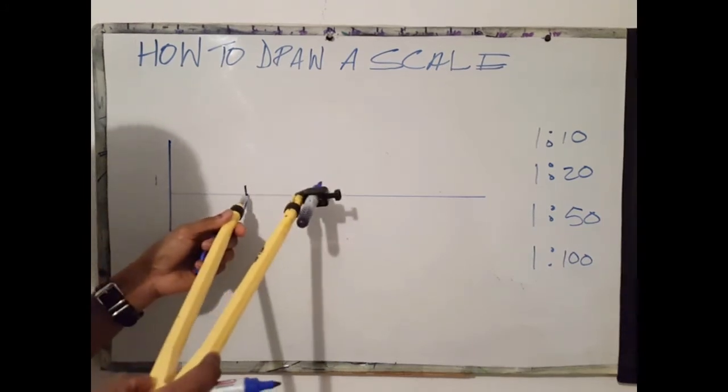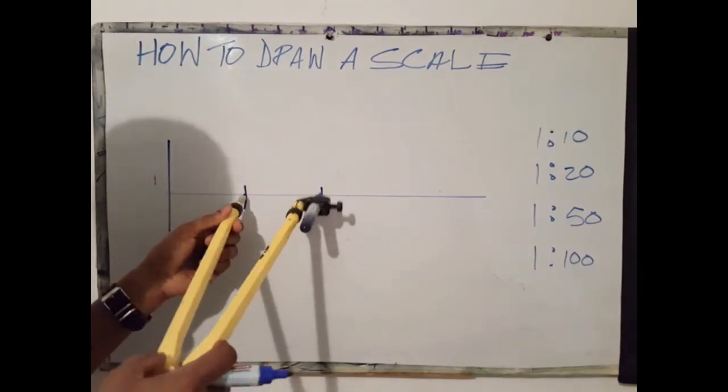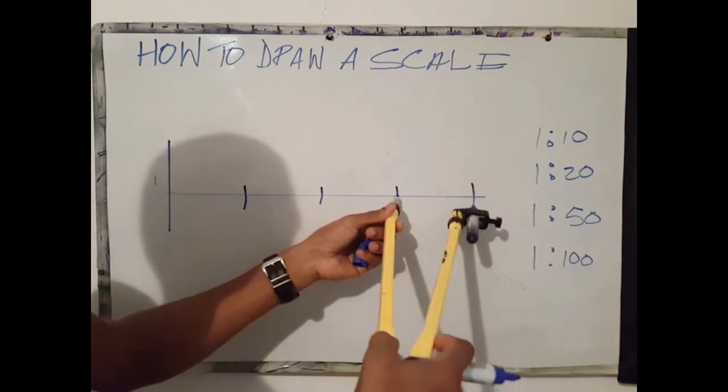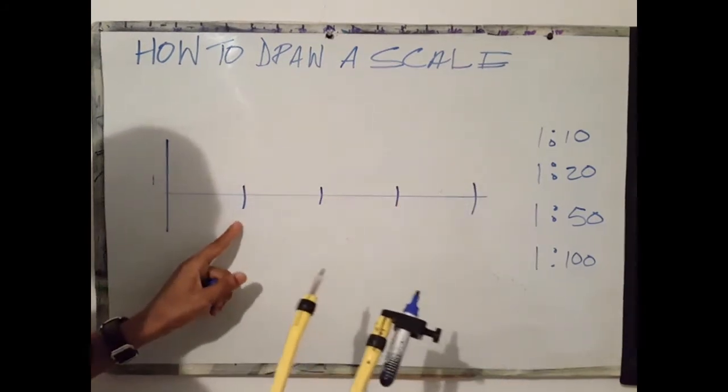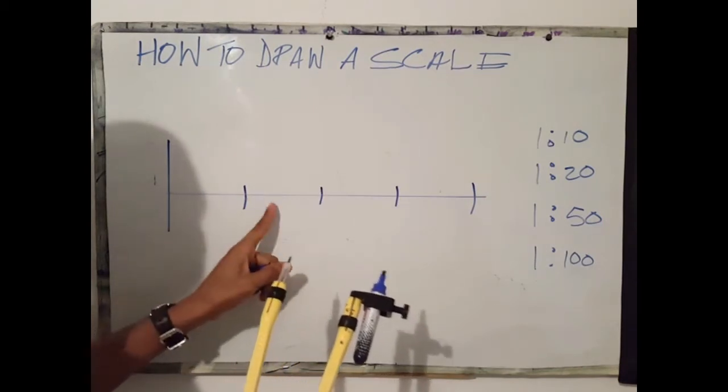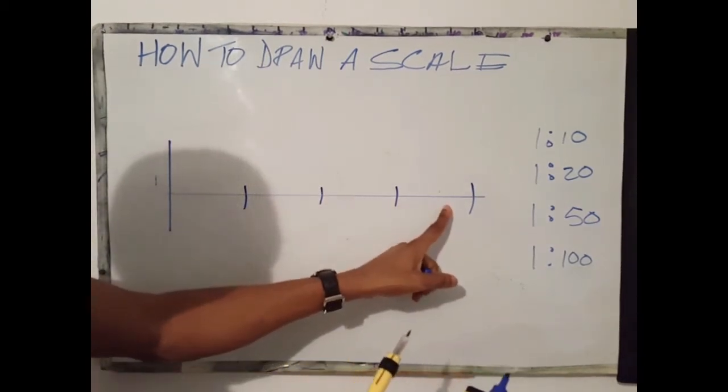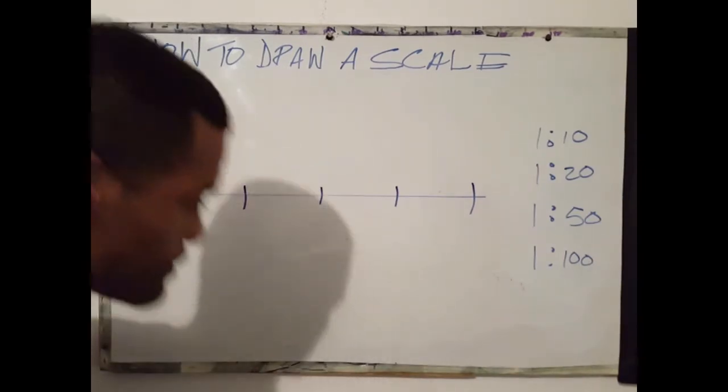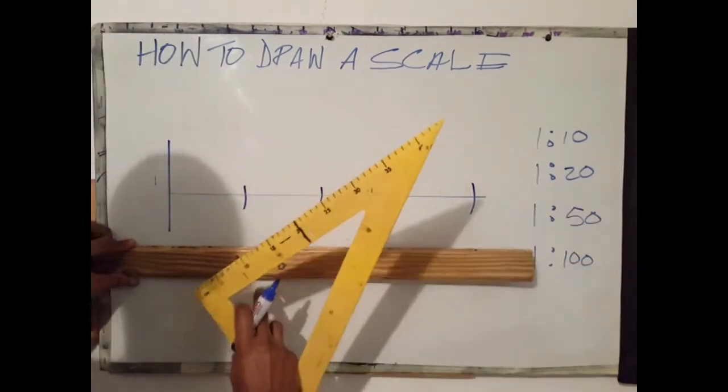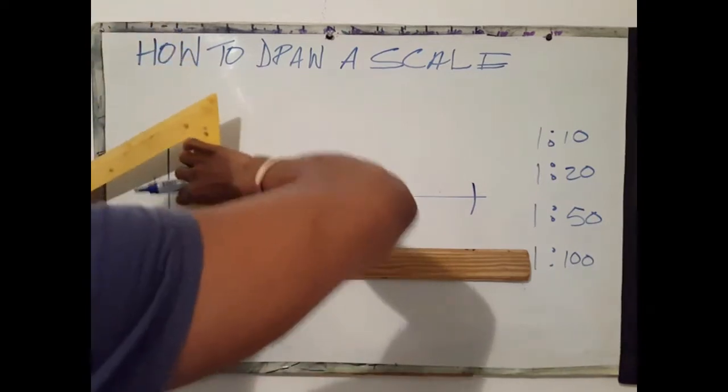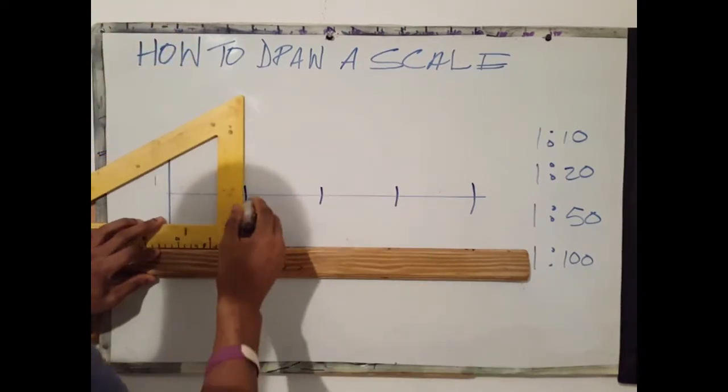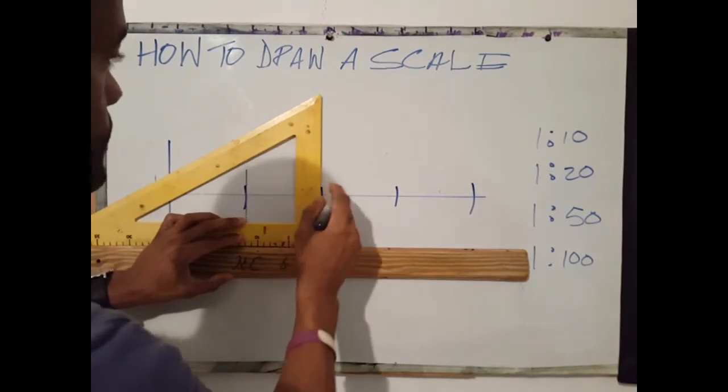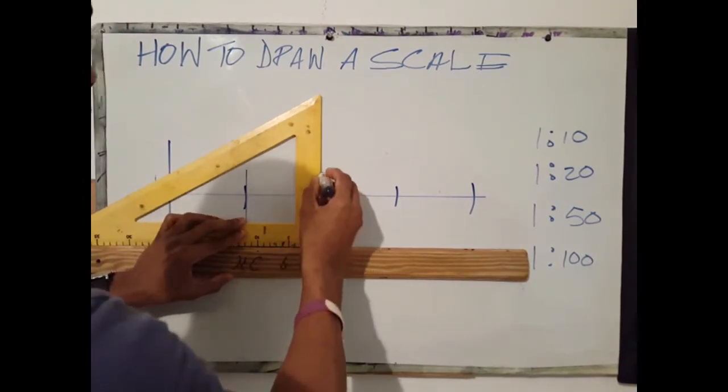So we have 1000, 2000, 3000, 4000. Here we have a scale that can measure up to 4000 mm. The next step is to draw some vertical lines through these points.